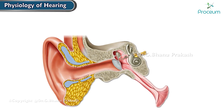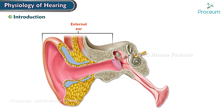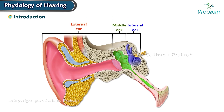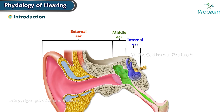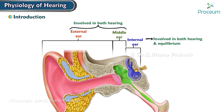Physiology of Hearing. The ear is divided into three functionally distinct regions: the external outer ear, middle ear, and internal inner ear. The external and middle ear structures are involved in hearing, and the structures of the internal ear are involved in both hearing and equilibrium.